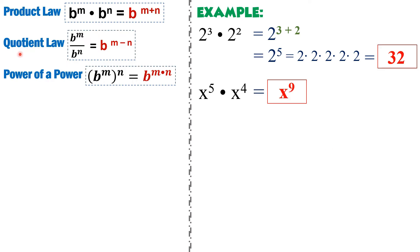For the quotient law, since this is division, the process is the same — only instead of adding, you subtract the exponents. If the numerator and denominator have the same base, you subtract their exponents. The minuend is from the numerator and the subtrahend is from the denominator.